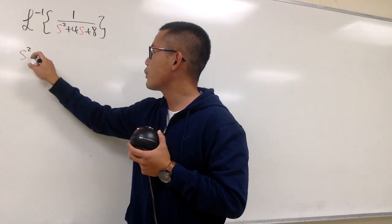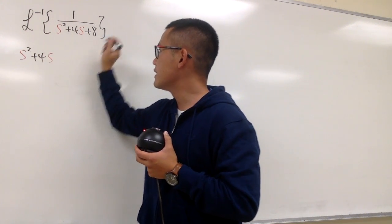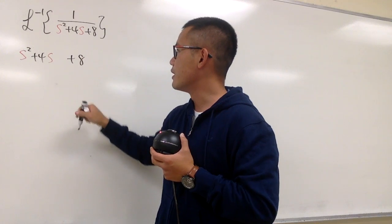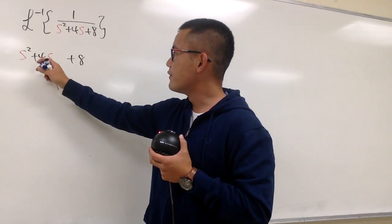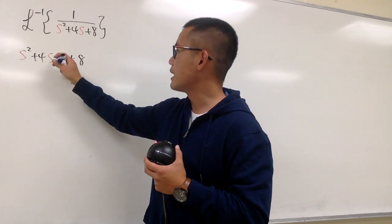And let me do it here for you. s squared plus 4s, leave a space, and then put down plus 8 right here. What do I need to put down right here? Well, half of 4 is 2, and square that is plus 4.